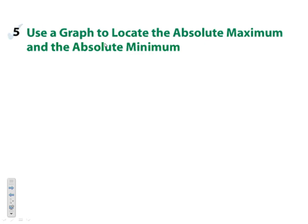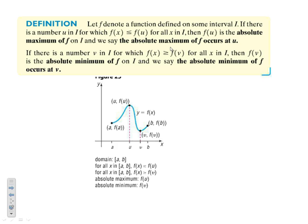Now we're going to use a graph to locate absolute max and absolute min. An absolute max occurs where the graph has the highest y value, and an absolute min occurs where it has the smallest y value. For this instance, the u value is our absolute max and the v value is our absolute min for this section of the graph.